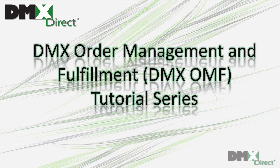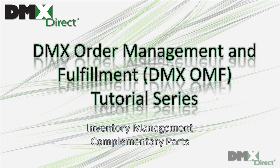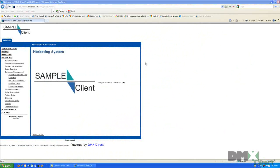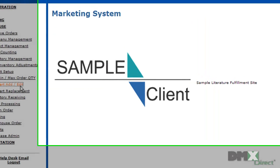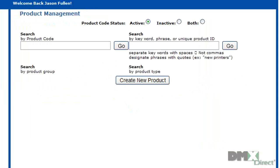Welcome to the DMX OMF tutorial series. In this installment, we'll be reviewing the setup process for complementary parts. The OMF system has the capability to assign complementary parts to individual products within your inventory. This is useful if you want to ensure certain products are always accompanied by, for example, a welcome package or promotional material.